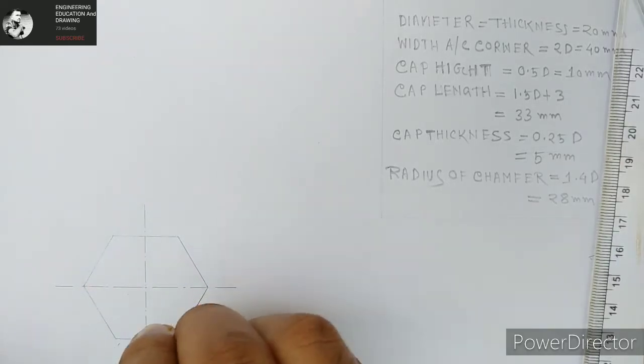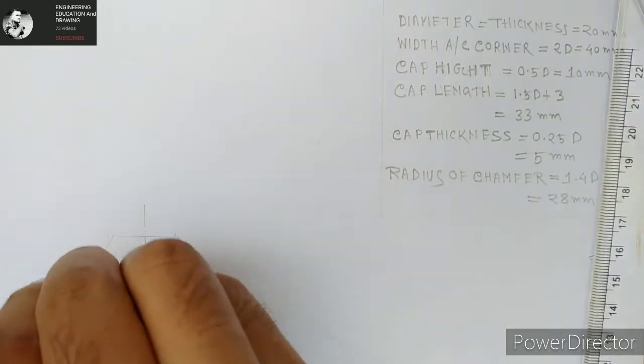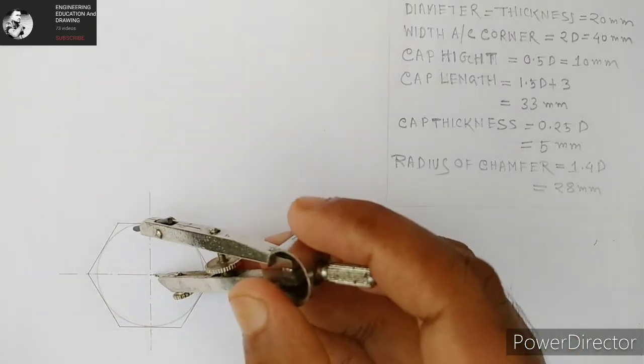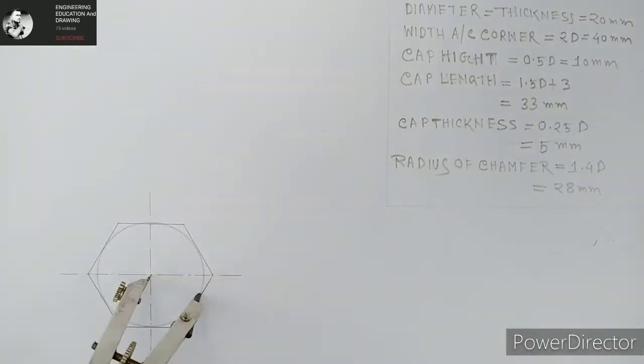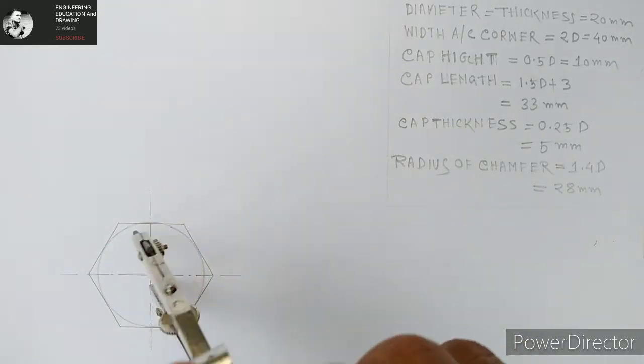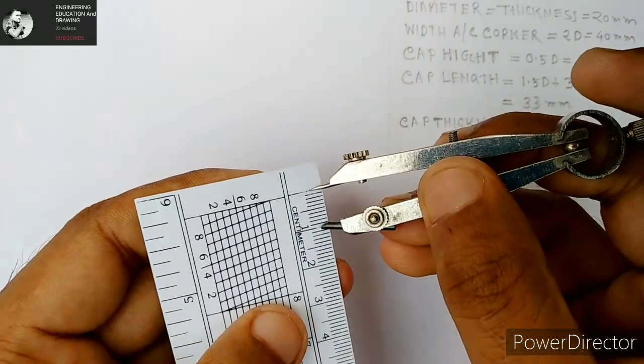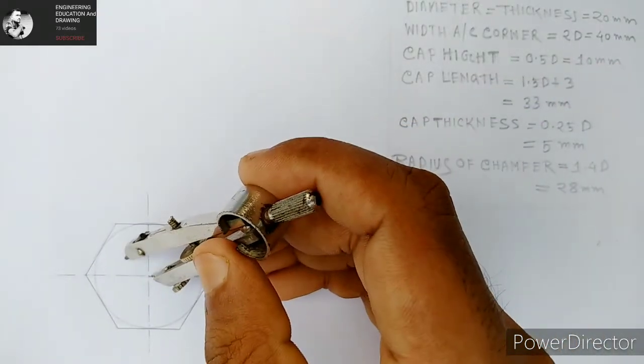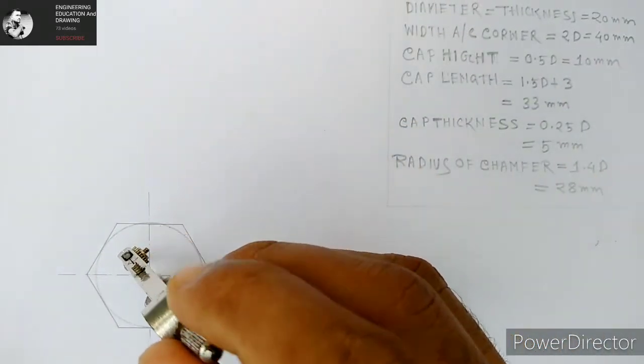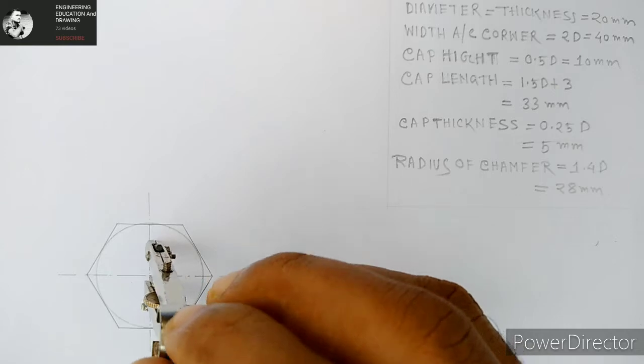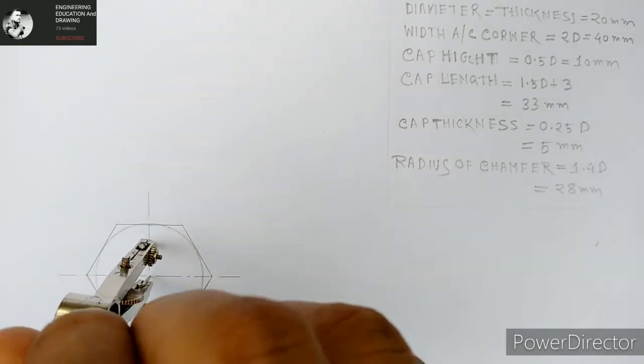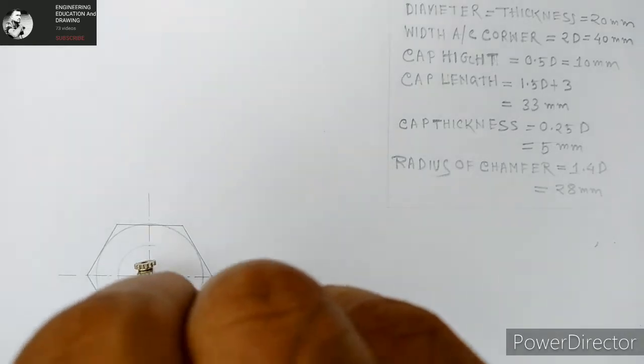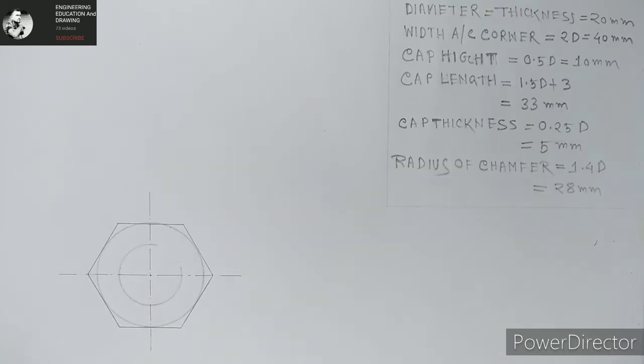After finishing it, we're going to erase the circle because it is not needed. We need the hexagon. Then we make this circle by using this as radius. After that we are taking 10 millimeter radius for the internal thread.